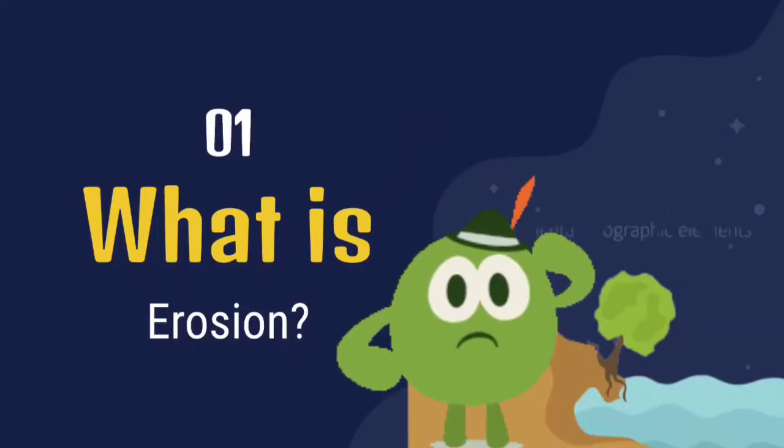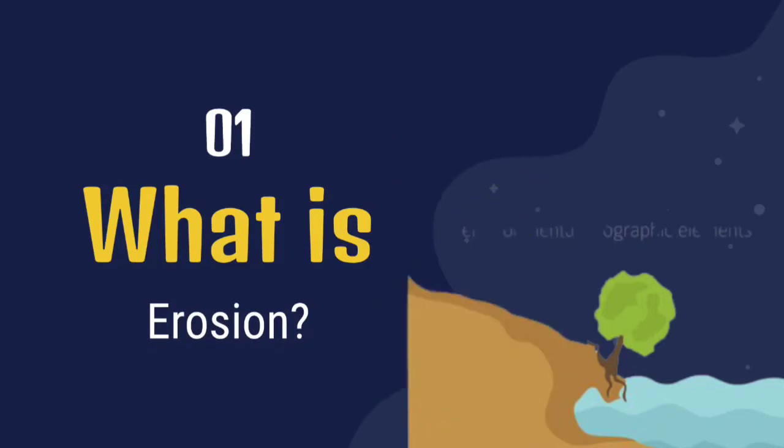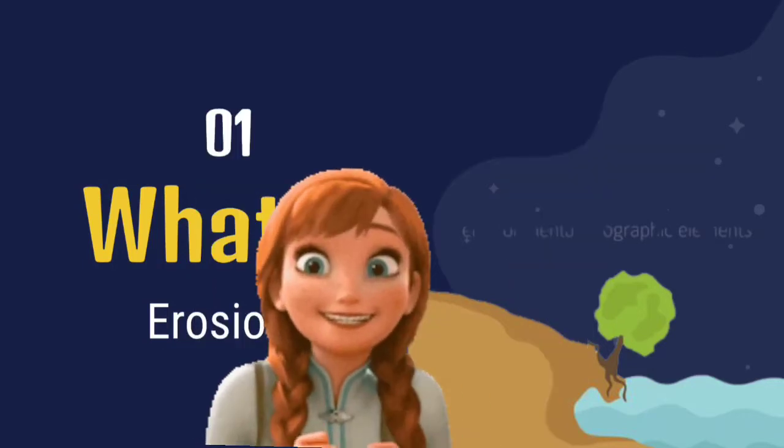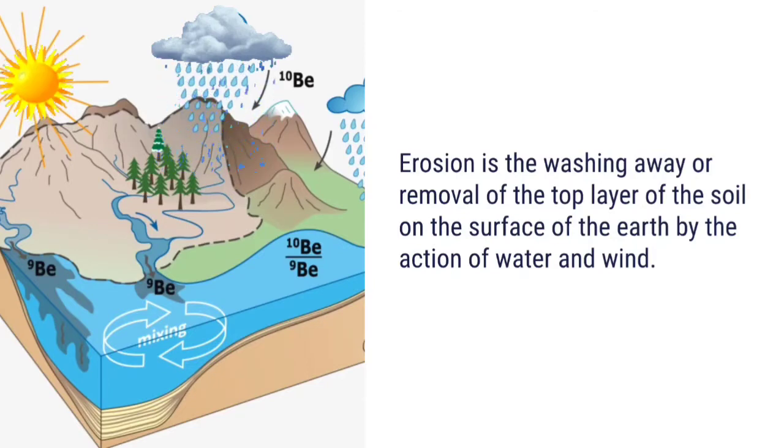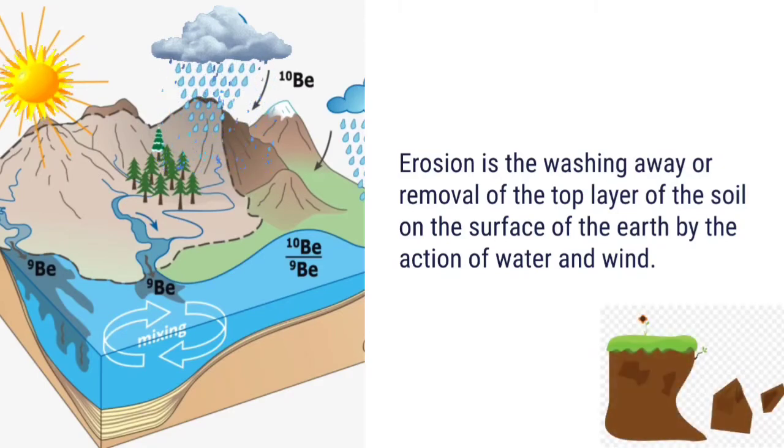Now what is erosion? Just like this picture we can see here, let's go and see a definition. But before that, can you try to explain erosion from this picture? Erosion is the washing away or removal of the top layer of the soil on the surface of the earth by the action of water and wind. Just like we can see in the picture, in this image. Now look at this picture that just popped out.